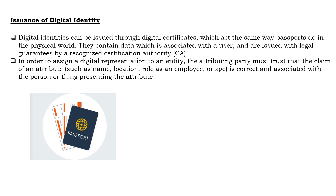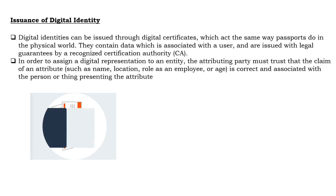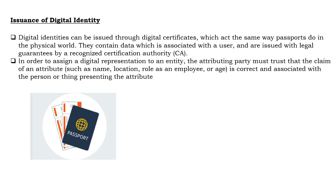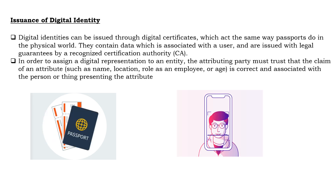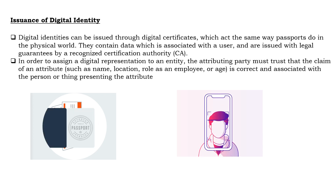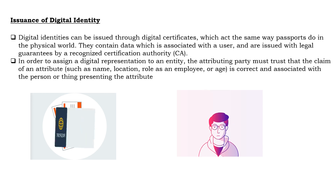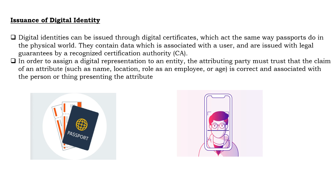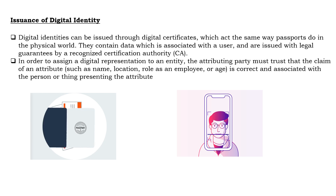In order to assign a digital representation to an entity, the attributing party must trust the claim of an attribute — such as name, location, role as an employee, or age — is correct. If it is correct, then the associated person will be given a digital identity. So if you want a digital identity, you go to the Certification Authority, prove your documents showing you are the person you are claiming to be, and they will issue a digital identity for you. Generally, this digital identity is issued by your employer, or by different bodies present on the internet, with the help of a CA.